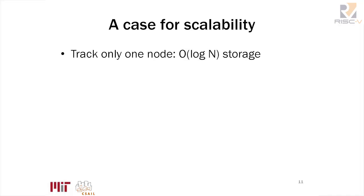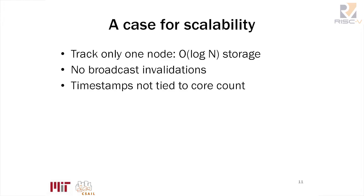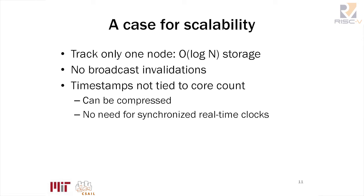Let's make the case for scalability. We only track the exclusive owner of any particular cache line, so there's only O(log n) storage. There are no broadcast invalidations thanks to the leasing scheme — we don't track read-only sharers, so when it's time to write new data, we just jump ahead in time and grant exclusive ownership instantly. Timestamps aren't tied to the core count and can be compressed, and you don't need synchronized real-time clocks as you might in a physical-time-based leasing scheme.